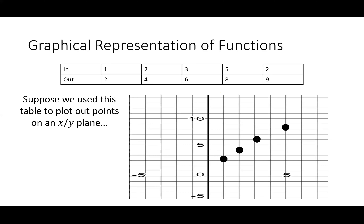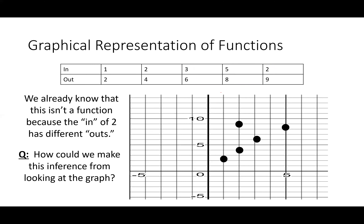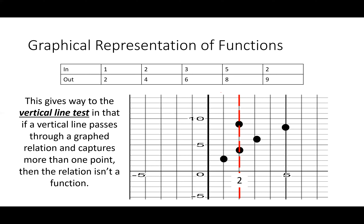Suppose we plot all of these points on the xy-plane and we ask: is this a function? We already know it's not, because the input of 2 has two different outputs. How can we make that inference just by looking at the graph? The offending input is 2, giving two different y-values. If I draw a vertical line at x = 2, I hit two different points — meaning one input has two separate outputs on the y-axis. This is what we call the vertical line test.